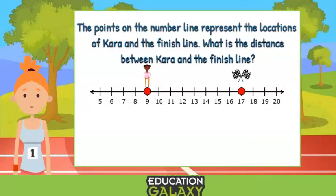8! That's right! Did you count the hops? You could also do 17 minus 9. So we know Kara is 8 units away from the finish line.